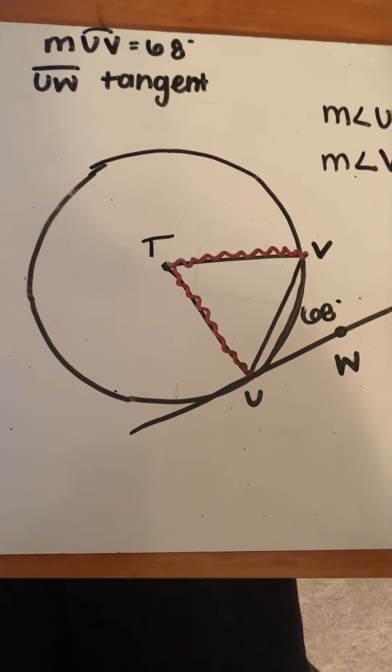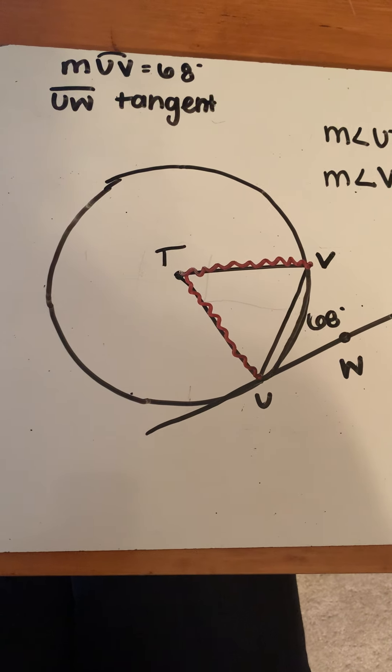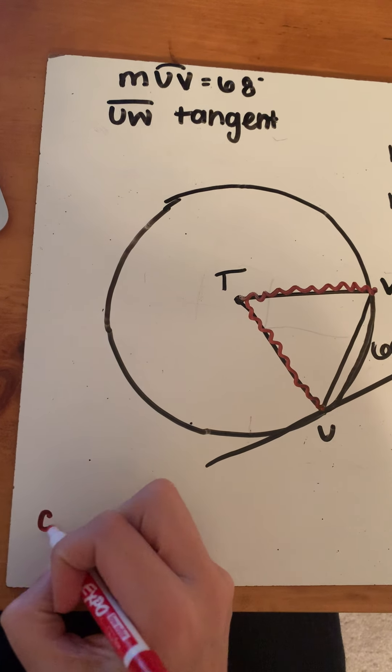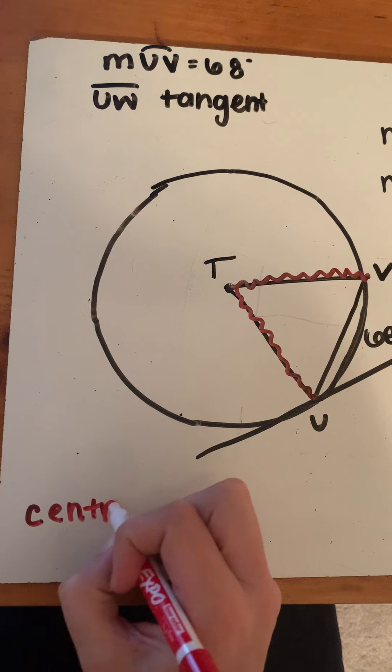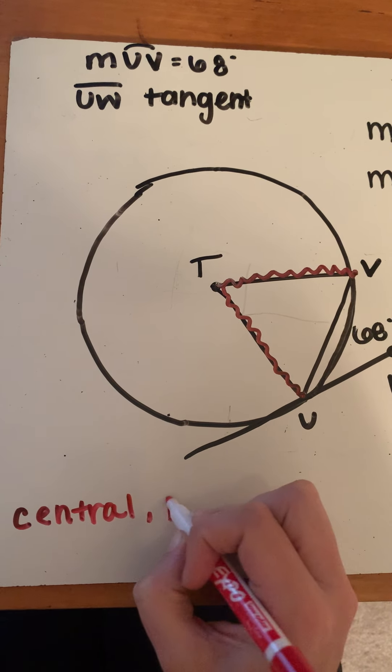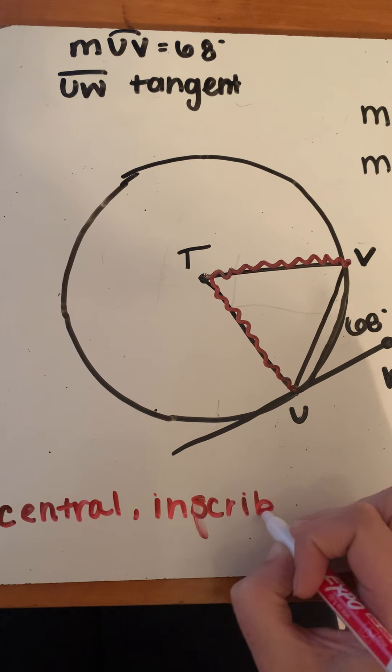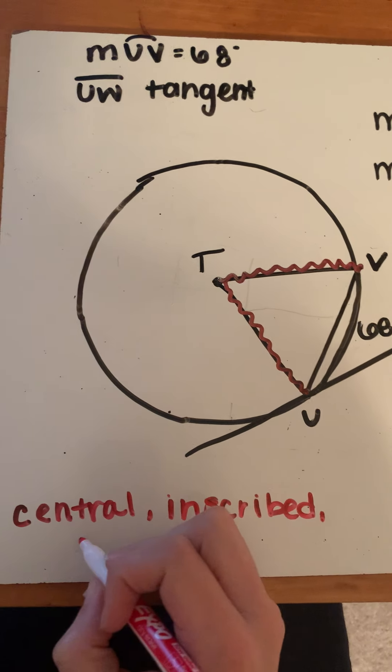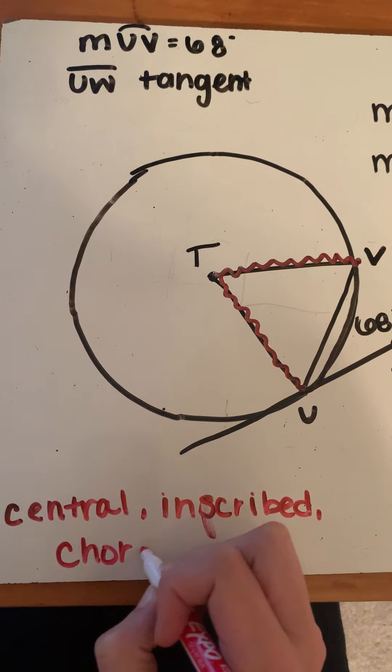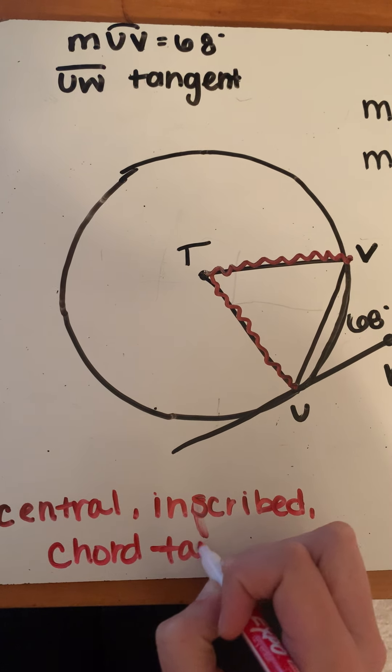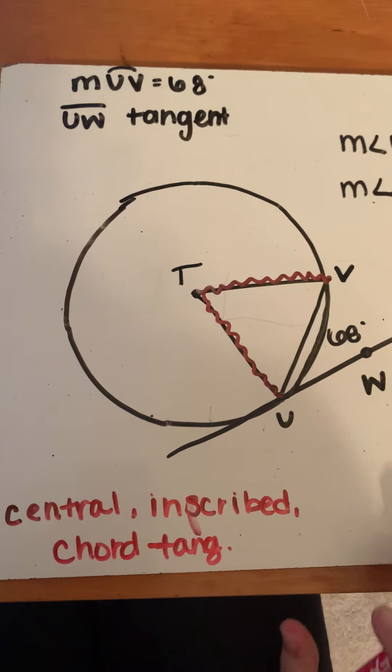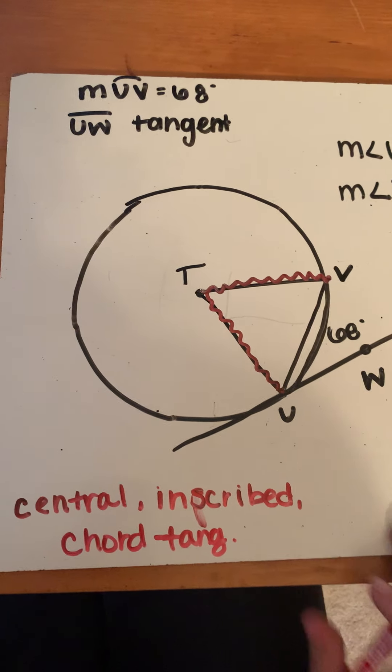First, ask yourself: what type of angle is this? The options are: it's either going to be a central angle, an inscribed angle, or an angle made with a chord and tangent. Looking at this, I would call this one a central angle.